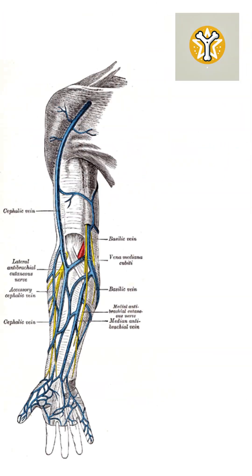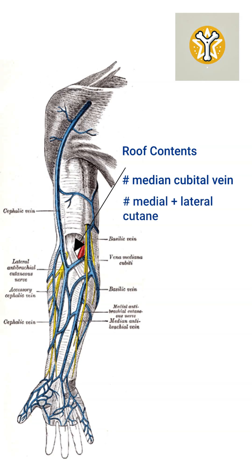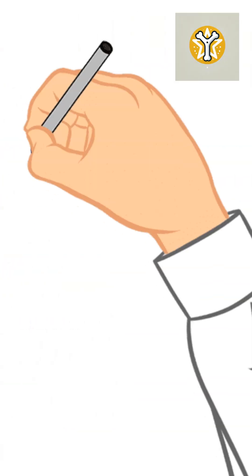The roof also contains the median cubital vein and the medial and lateral cutaneous nerves of the forearm. Laterally, there's also the radial nerve to be aware of.